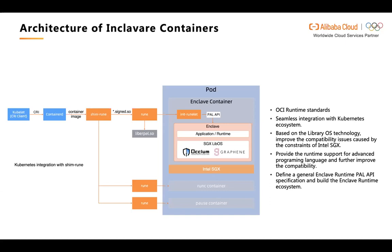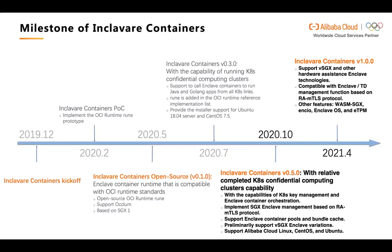Inclave Containers also supports Kubernetes runtime class features, which allows selecting the runE container runtime in Kubernetes and Docker by configuration. The Inclave Container project kicked off in December last year and was open sourced in May. Its first release was V0.1, implementing the OCI runtime called runE and supporting Occlum. With cooperation from Intel, it supports Intel SGX TEE solution, and the project has had a monthly release cadence since then.